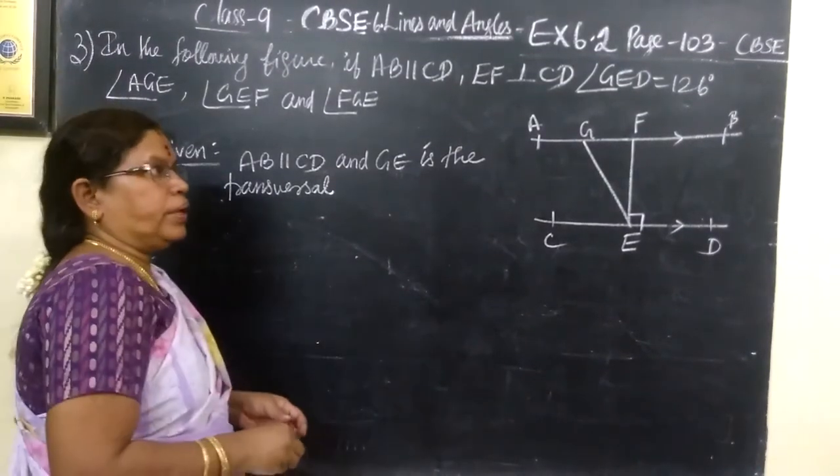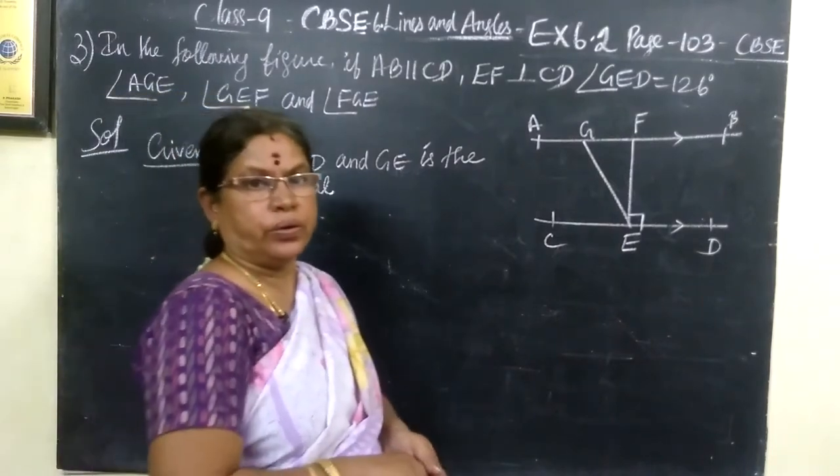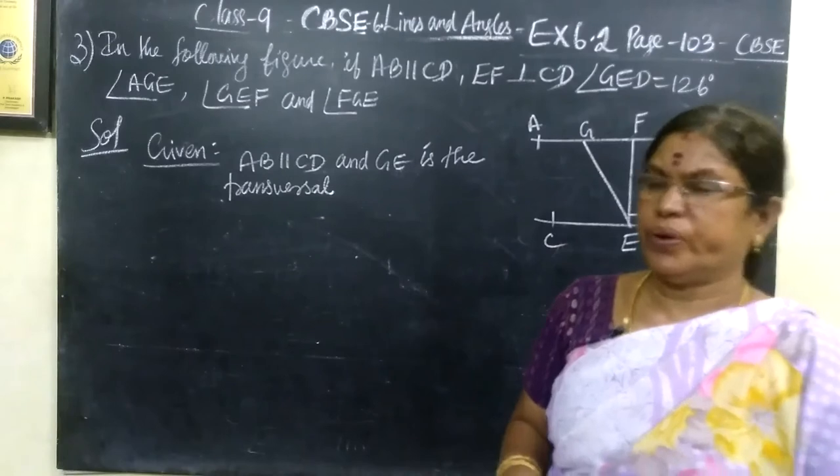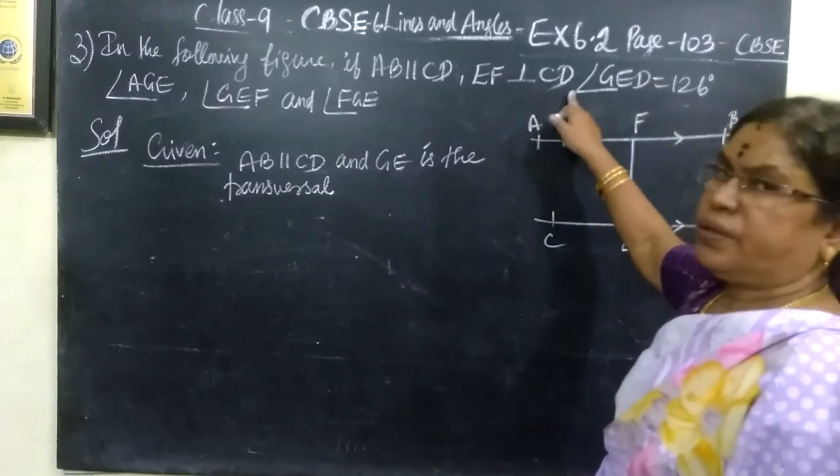So now question number 3, exercise 6.2. You are given AB parallel to CD and you are given the perpendicular, EF perpendicular CD.